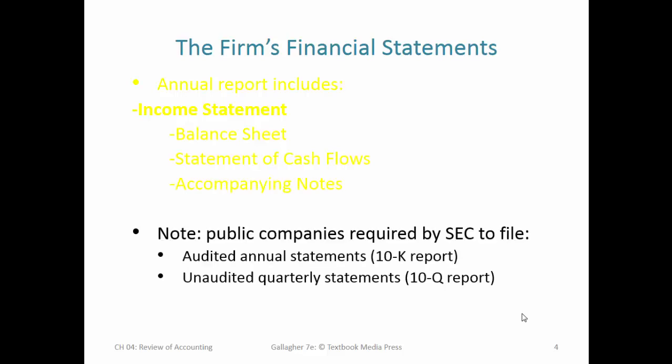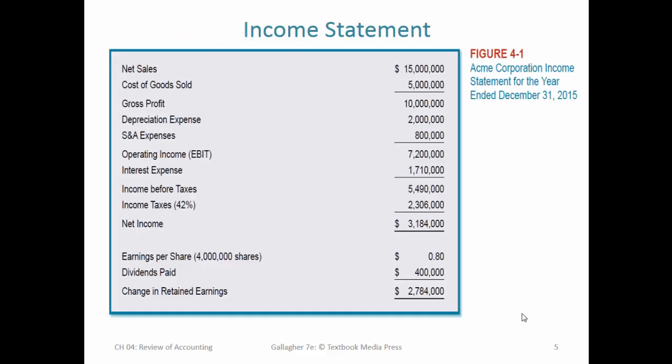In the United States, public companies — which means they have shares of stock that are publicly traded — are required by the Securities and Exchange Commission to file audited annual statements, known as the 10-K, and then unaudited quarterly statements, known as the 10-Q.